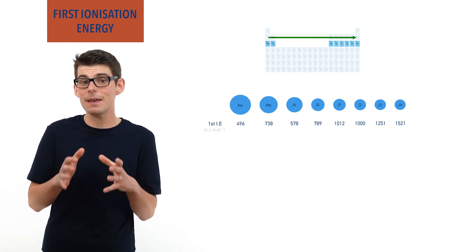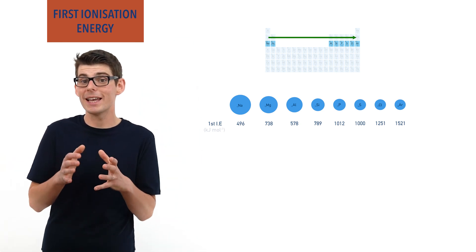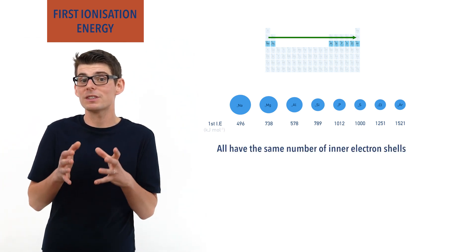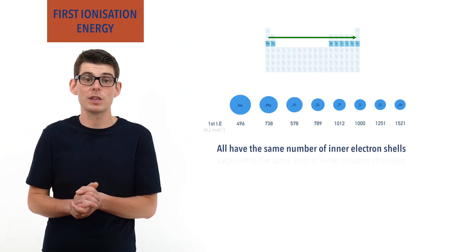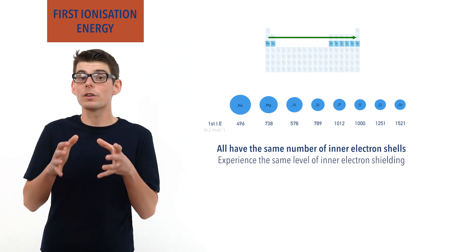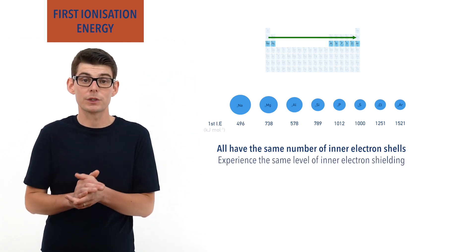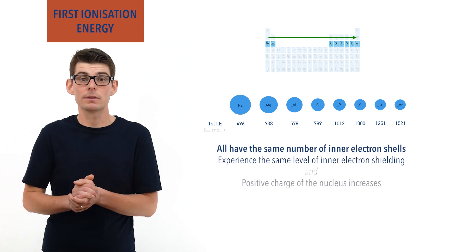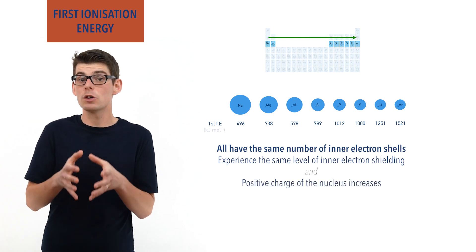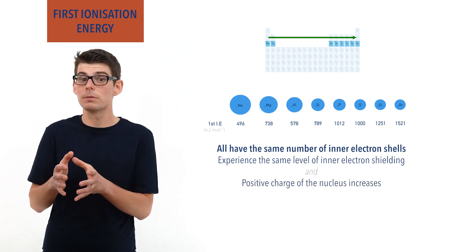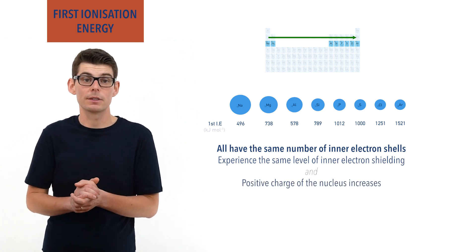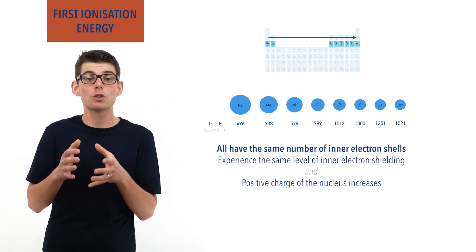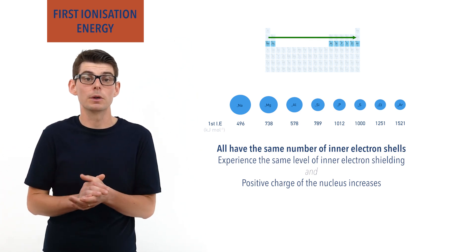All these elements have the same number of inner electron shells, meaning they all experience the same level of inner electron shielding. At the same time, moving from left to right, the positive charge of the nucleus increases, causing greater attraction between the outermost electrons and the nucleus, decreasing the atomic radius, and making it harder to remove the outermost electron.